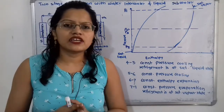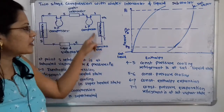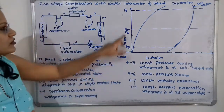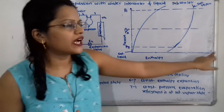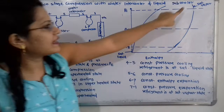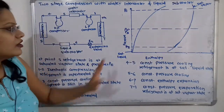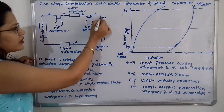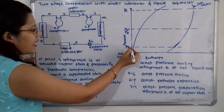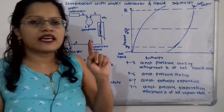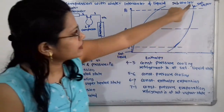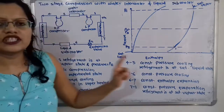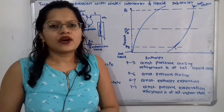We will consider that initially the refrigerant is at pressure equal to evaporator pressure PE and it is at the saturated vapor state. Here is the pressure axis and the enthalpy axis, with the saturated liquid line and the saturated vapor line. We will first select where point 1 is — at evaporator pressure PE on the saturated vapor line. This is the initial condition of the refrigerant.